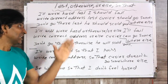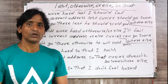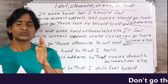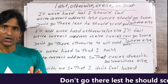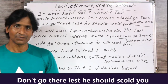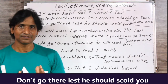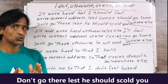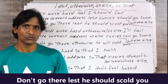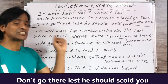Third sentence: 'Don't go there lest he should scold you.' Meaning: वहाँ मत जाओ, कहीं ऐसा न हो कि वो तुम्हें डाँटे. Don't go there lest he should scold you. So those were the three 'lest' sentences.